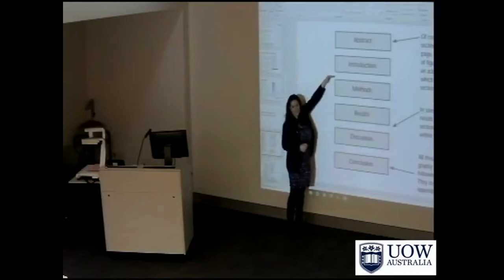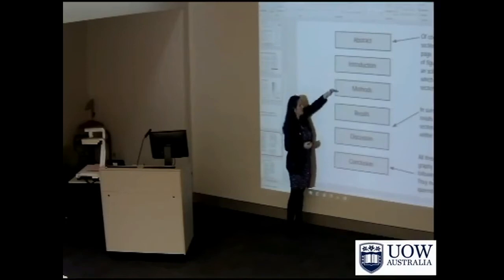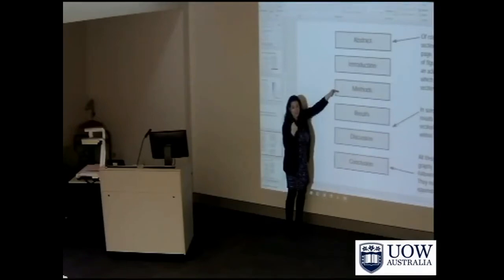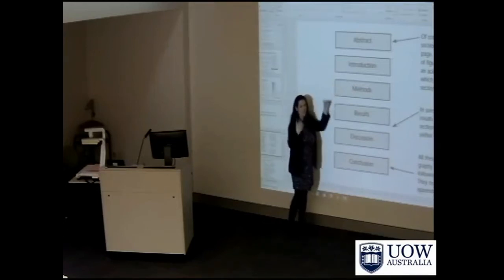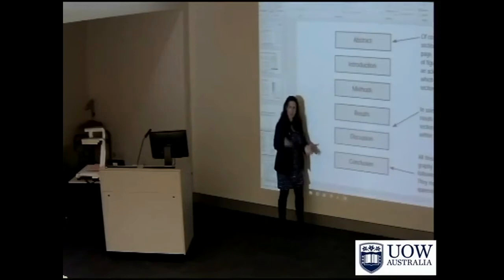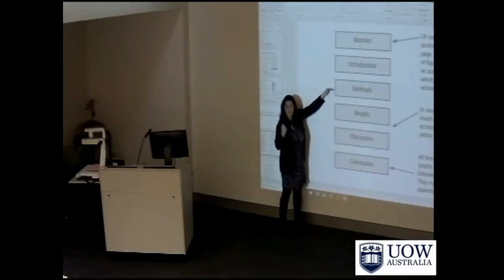Usually there's a literature review where you review other people's work and methods, look at similarities and differences, and then have a conclusion. The methods chapter covers your survey, interviews, focus groups, simulation, experiment, or design science element. You need to look at methods books to understand the language: is yours qualitative, quantitative, triangulation, or simulation? You must talk about data collection and data analysis — two components that are essential no matter what kind of thesis you're doing.